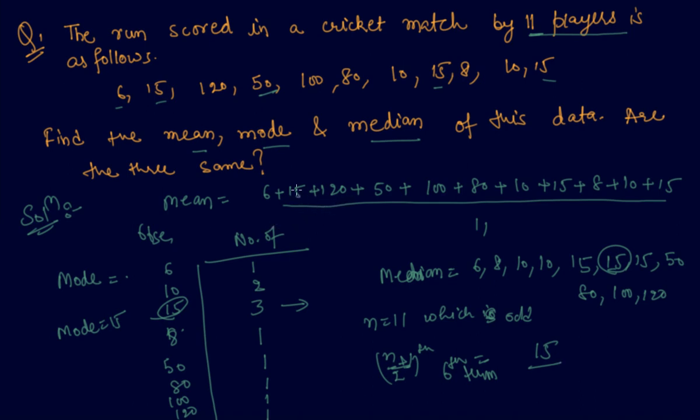The mean is the average of all observations — calculate the sum and divide by eleven. I hope you are now clear about how to find the mean, median, and mode of any set of observations. If you still have any doubt, please comment in the comment section. Thank you, happy learning!